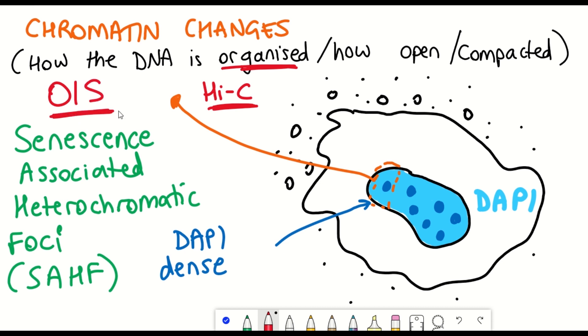One way in which to study these changes in genome organization include Hi-C, and this process requires both experimental and computational methods to execute.